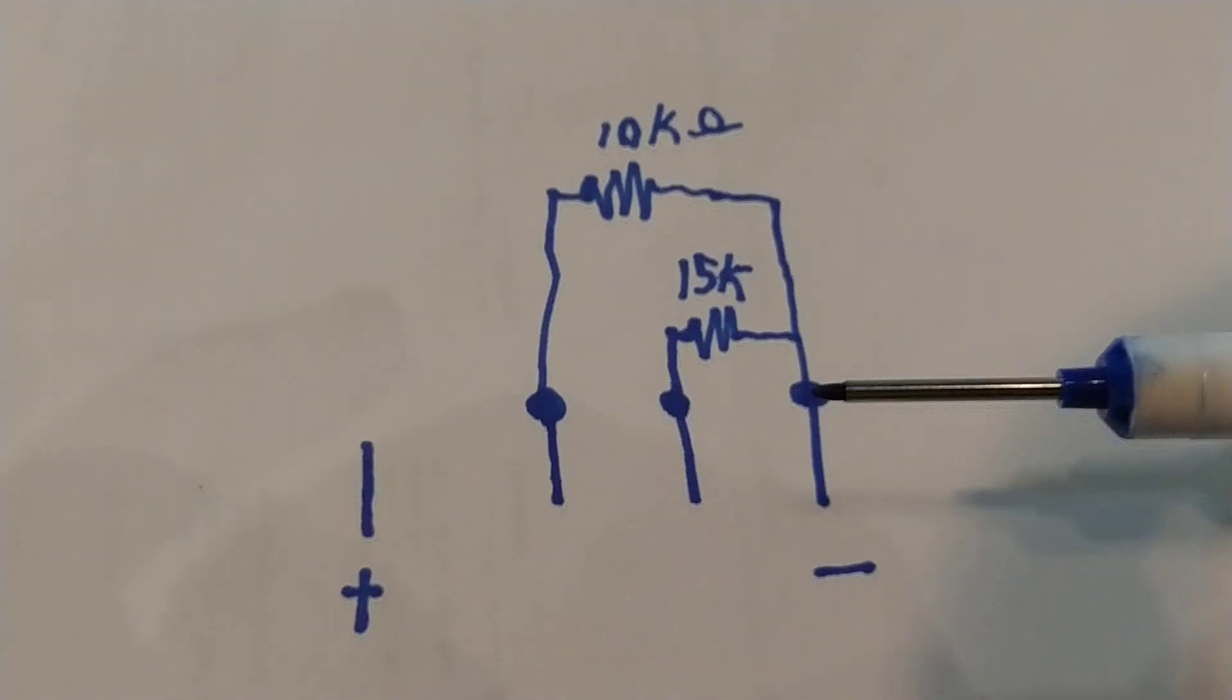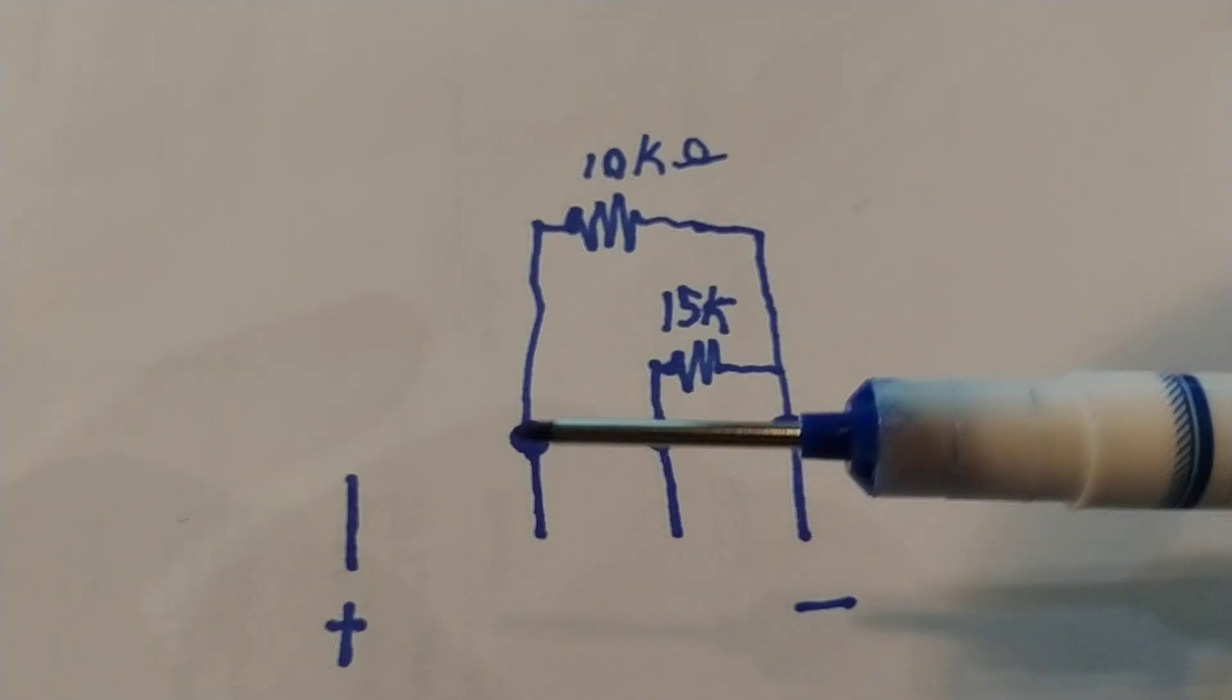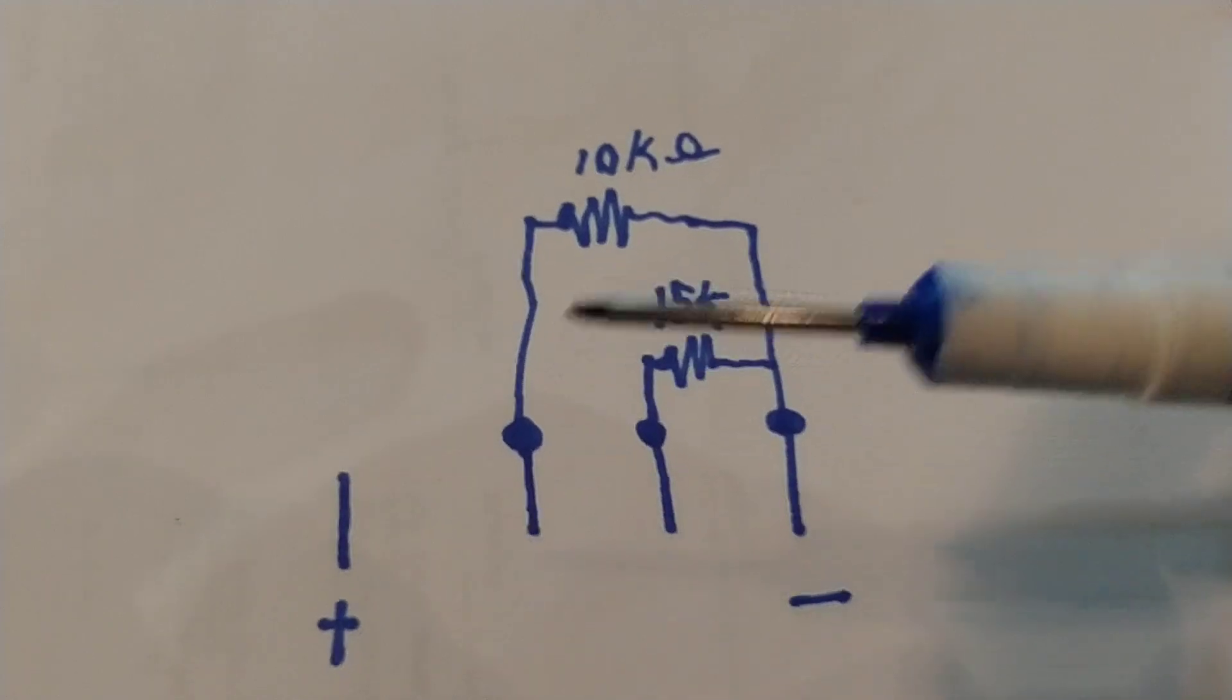Series to your negative lug, and then you also do 10k from the same negative lug over to what I call the third one, or the one next to the positive.